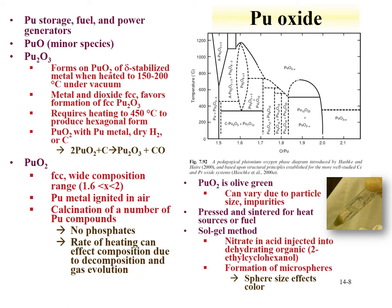Plutonium dioxide is olive green, and this color can vary due to particle size and impurities. Plutonium dioxides have been produced through a sol-gel method where the nitrate in acid is injected into an organic phase and microspheres are produced. By tuning the sphere size, the color of the material can be influenced.